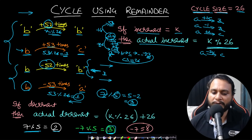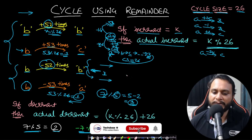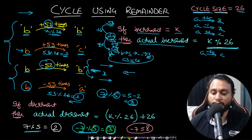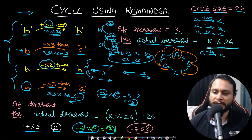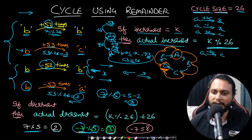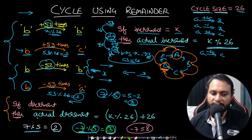With an alphabet of size 5, minus 7 means 2 times left shift is equivalent to 3 times right shift. For example, with items A B C D E forming a cycle of size 5: starting at A and doing 2 left shifts reaches D, just as 3 right shifts also reaches D. Therefore, if you see a decrement operation, the actual decrement is k mod 26, and if the result is negative, add 26 to get the equivalent right-shift offset.